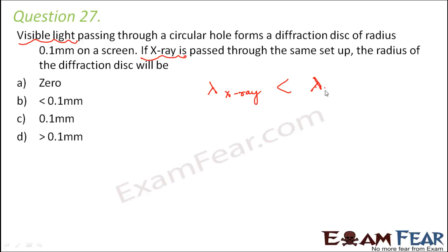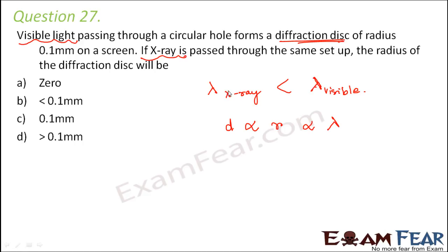The diameter of the diffraction disk is proportional to its radius, which in turn is proportional to wavelength. Since the wavelength of X-ray is less than that of visible light, the radius of the diffraction disk for X-ray would also be less than 0.1 mm.